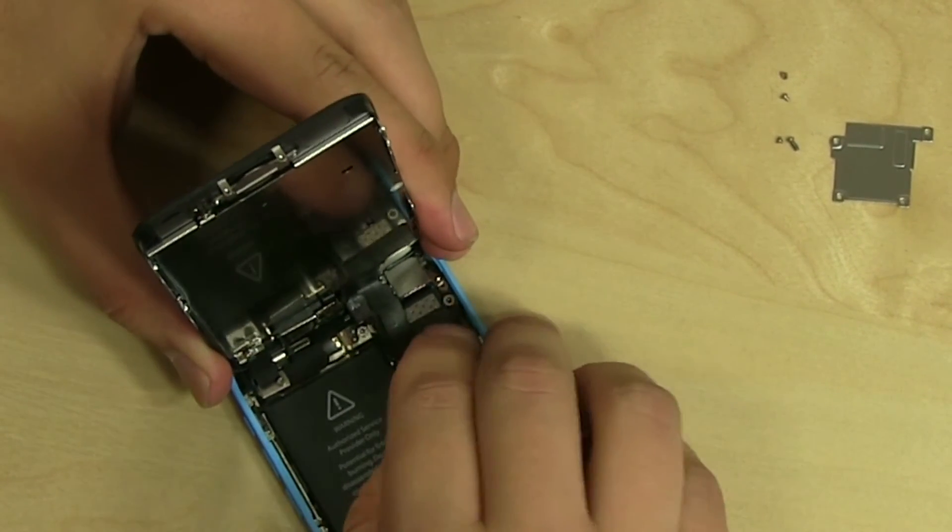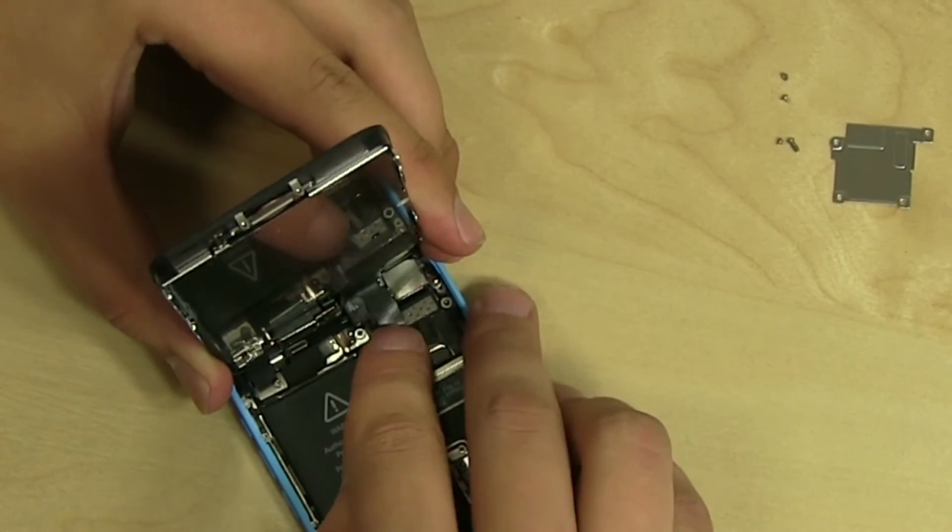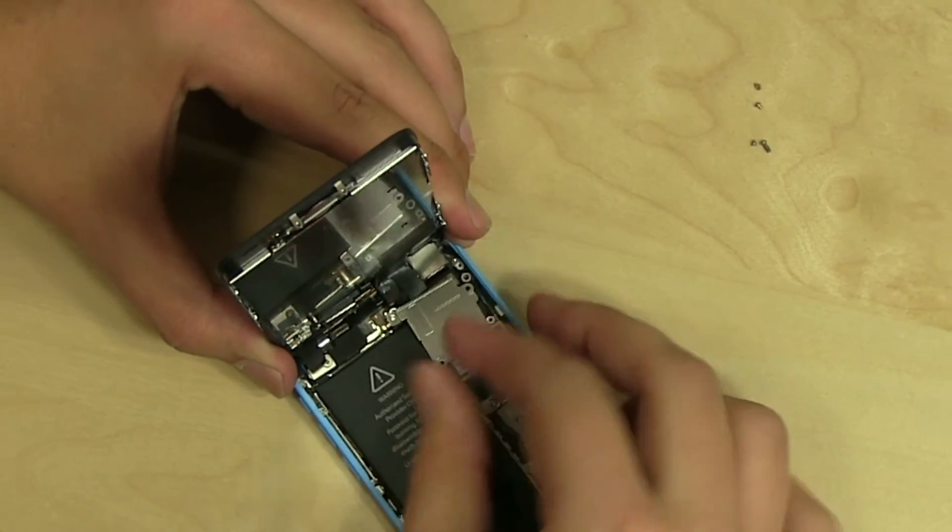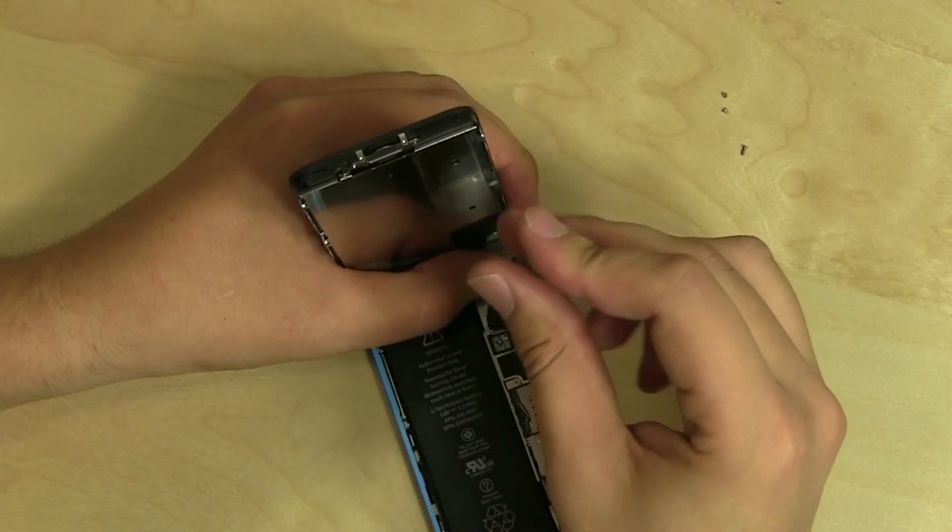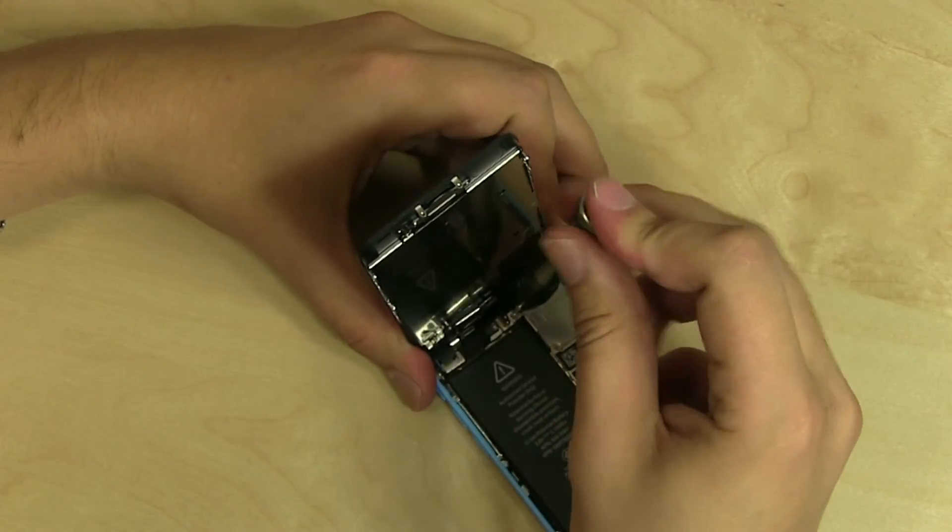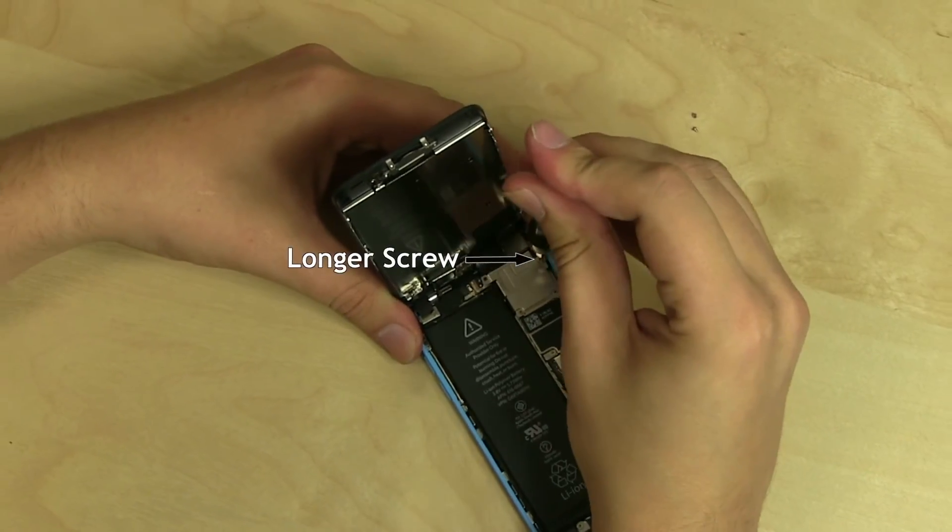Connectors are extremely fragile. Make sure to align them well and do not apply too much force. Replace the metal shield and secure it with four Phillips screws. The longer screw goes in the top right corner.